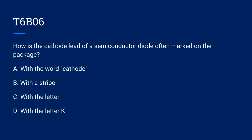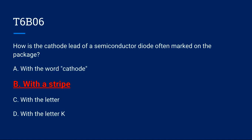T6B06: How is the cathode lead of a semiconductor diode often marked on the package? A, with the word cathode. B, with a stripe. C, with the letter. Or D, with the letter K? The correct answer is B, with a stripe.